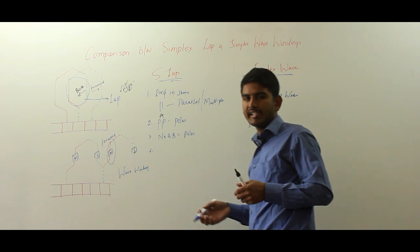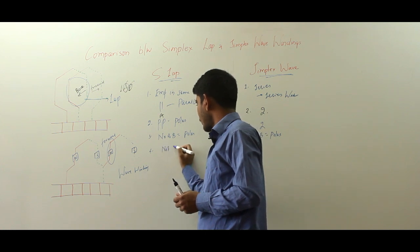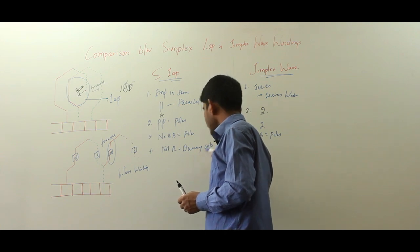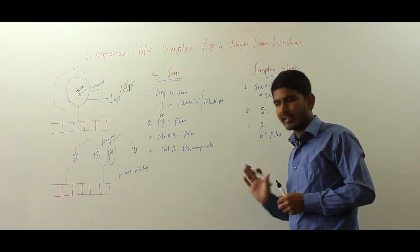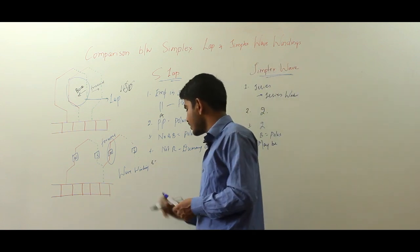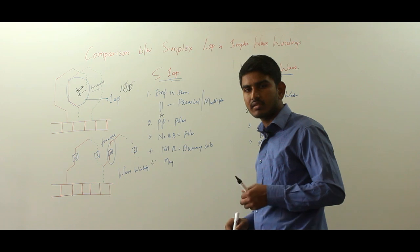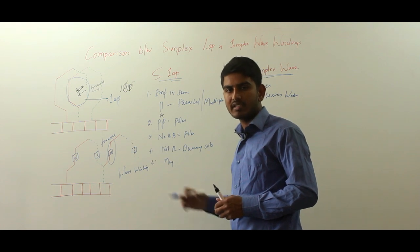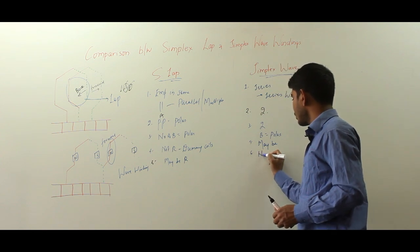The fourth difference involves dummy coils and equalizer rings. In simplex wave winding, dummy coils are not required. Dummy coils are inactive coils used to give mechanical balance to the machine. In lap winding, dummy coils may be required. Regarding equalizer rings — these are low-resistance copper rings connected to points to equalize potential difference and avoid circulating currents — equalizer rings may be required in lap winding but are not required in wave winding.